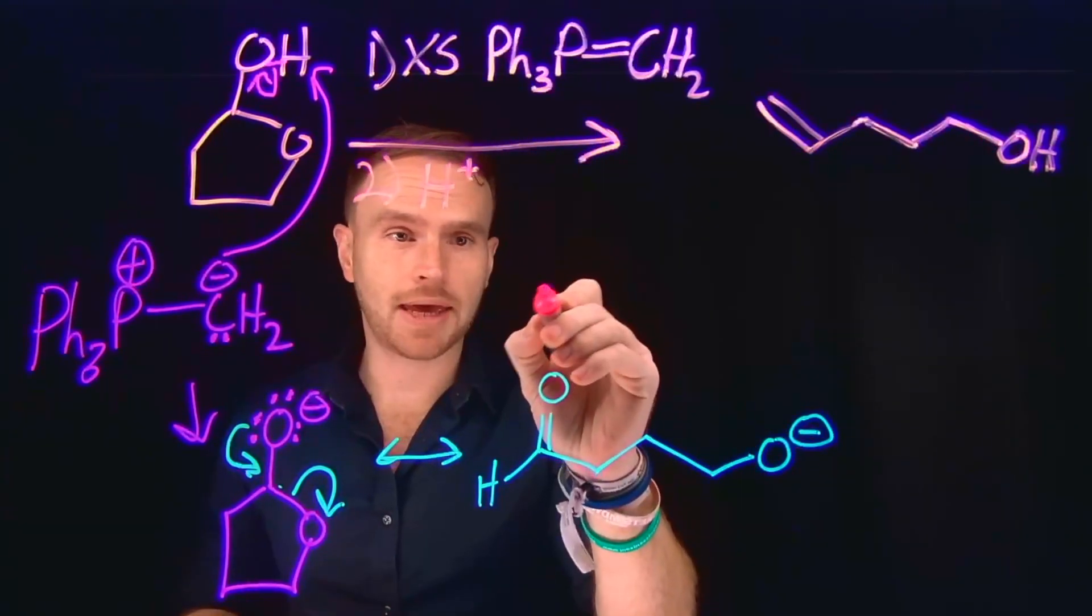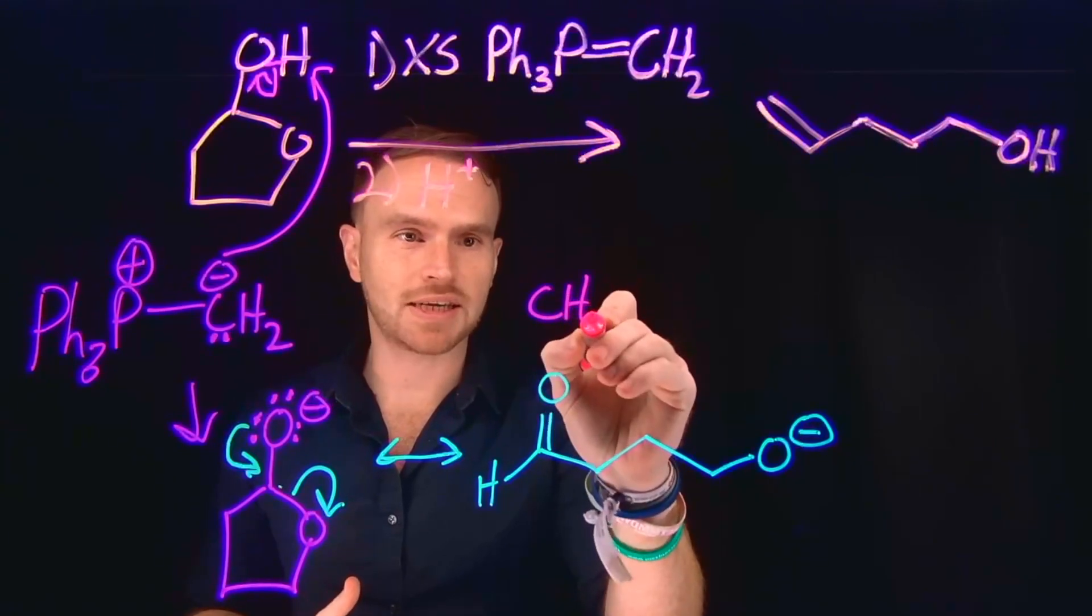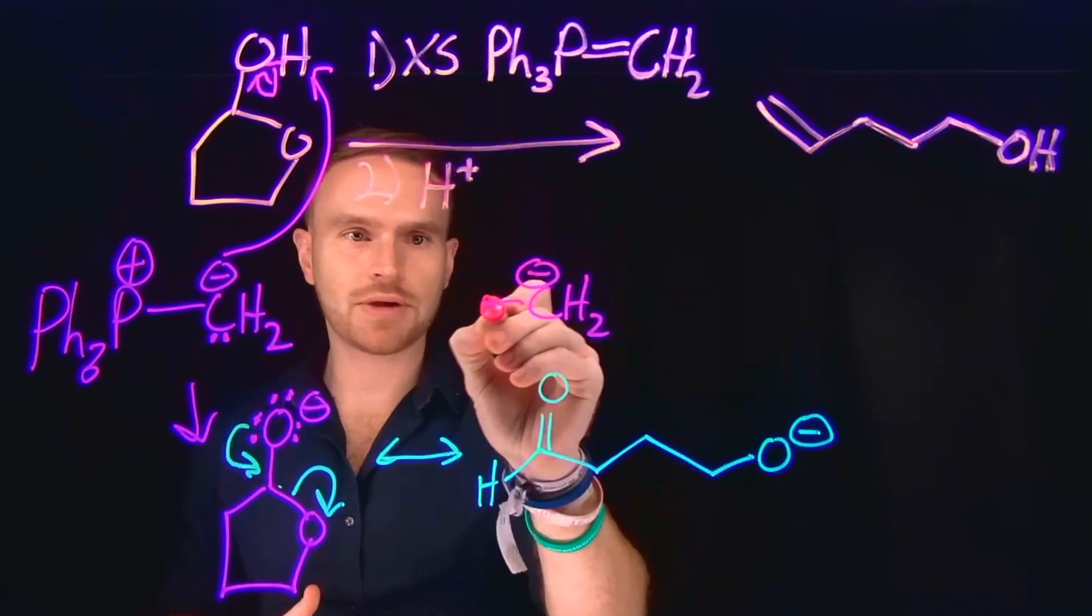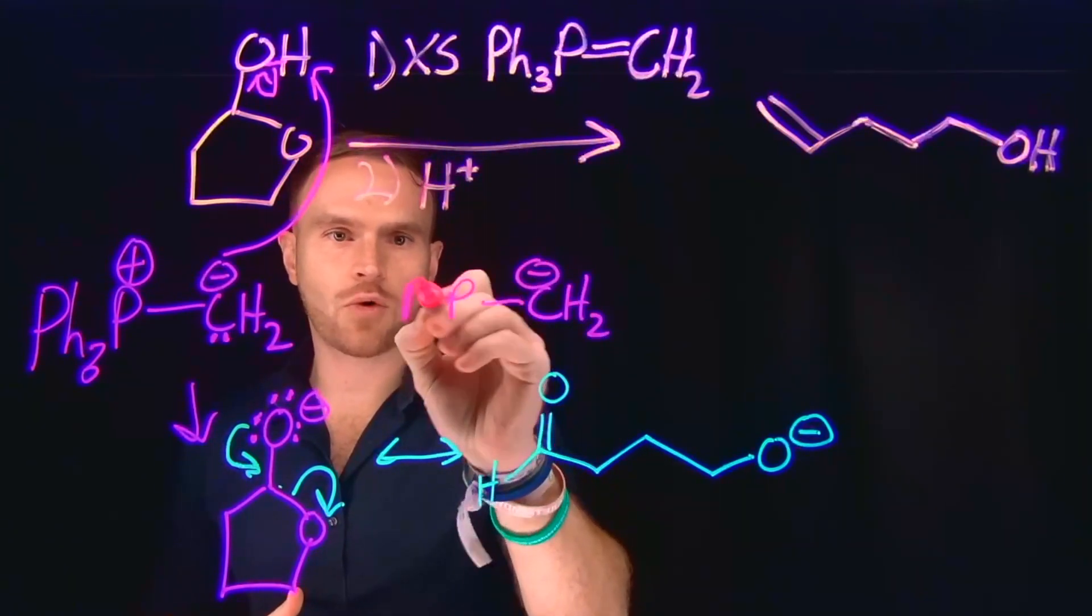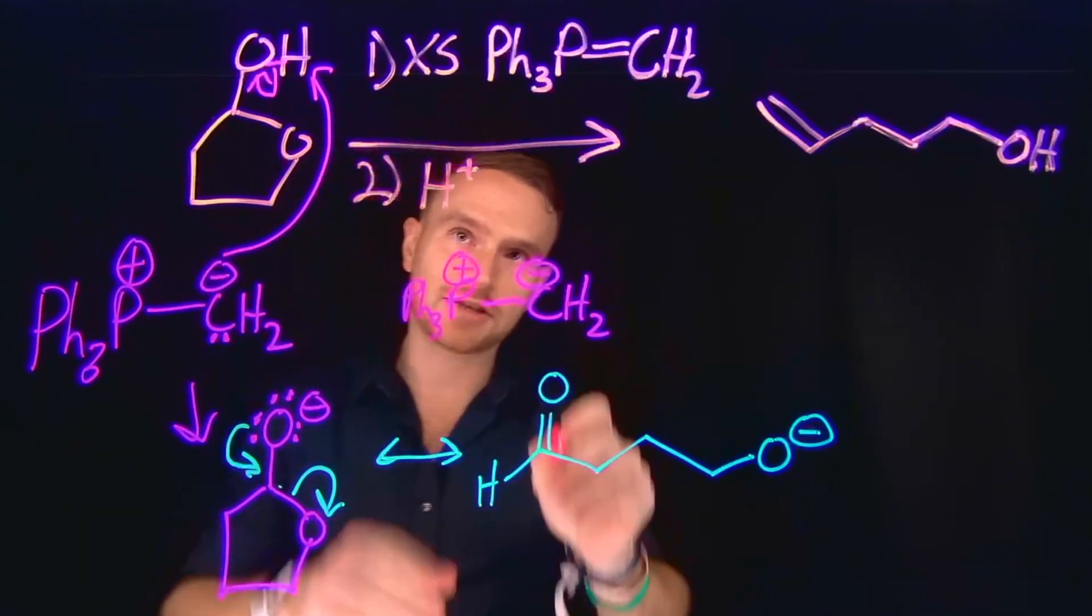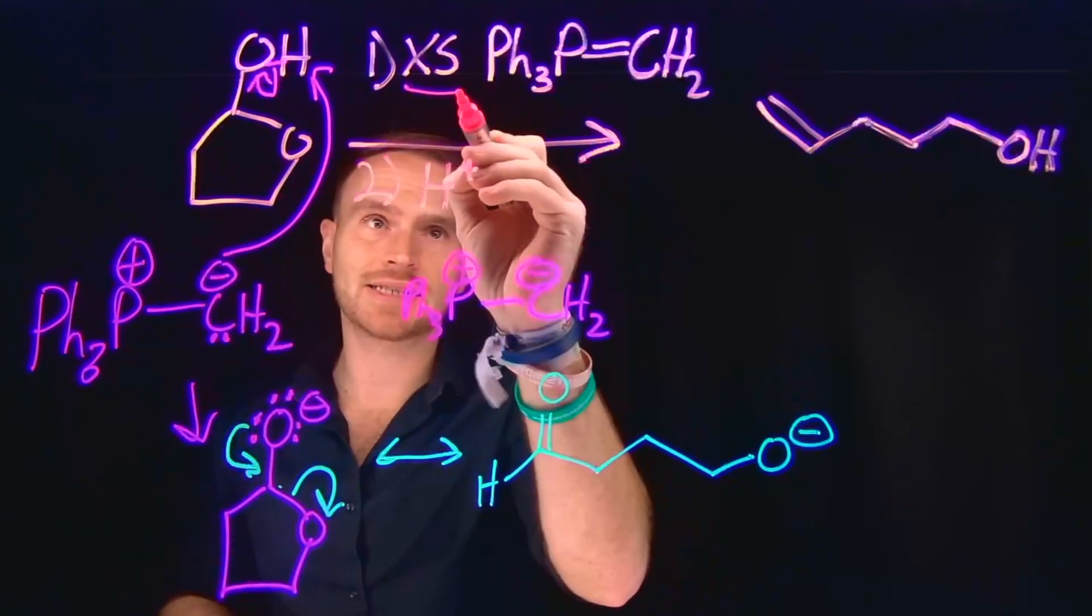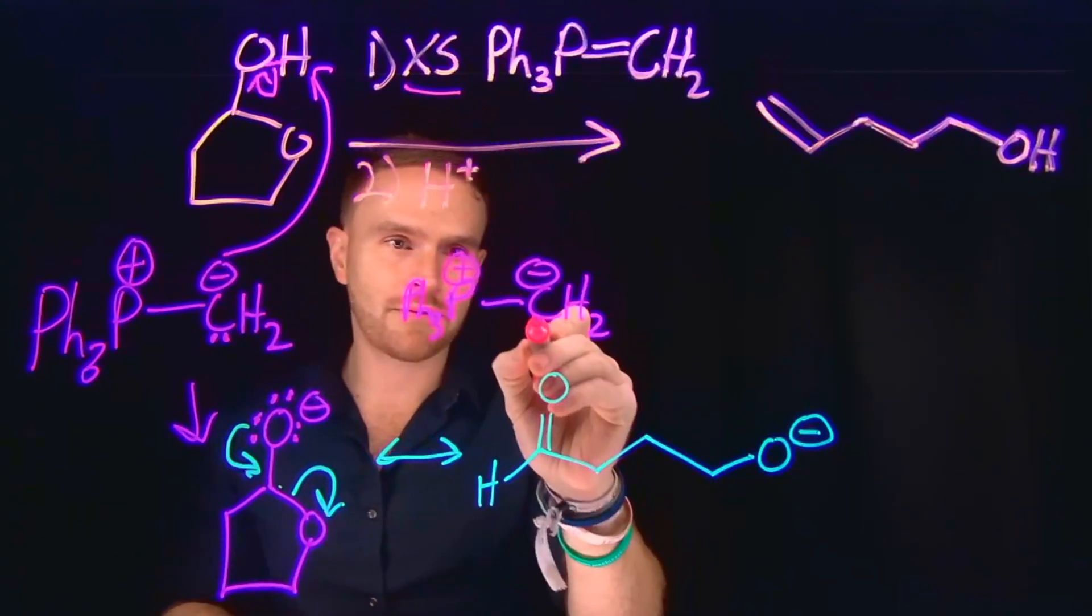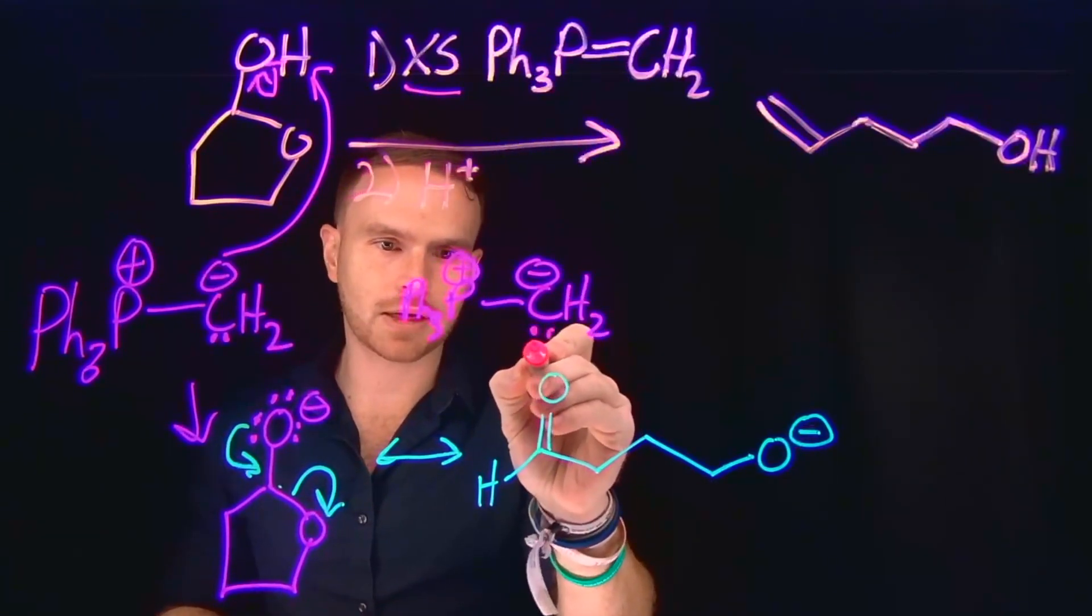And now the Wittig reagent can come in and behave as you've probably seen Wittig reagents react previously where they transform carbonyl compounds into alkenes. So if we re-enter, because remember we had an excess amount of this Wittig reagent, from here the lone pair on carbon can come in, attack this carbonyl oxygen, moving up these electrons.